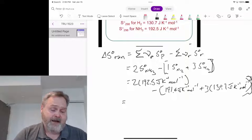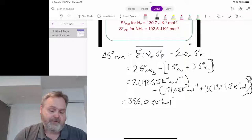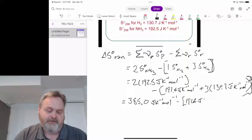I'm going to try and do this in my head, possibly a mistake, but hey, there we go. So we're going to get 385 joules per Kelvin per mole, from which we're going to subtract 191.6 joules per Kelvin per mole, plus three times 130.7 is going to be 392.1 joules per Kelvin per mole.